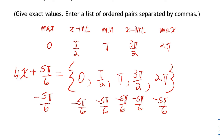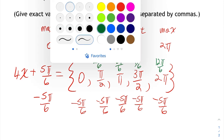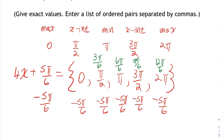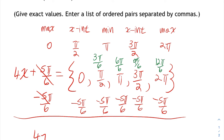For instance, pi over 2 is the same as 3 pi over 6, and pi is the same as 6 pi over 6. 3 pi over 2 is the same as 9 pi over 6, and 2 pi is the same as 12 pi over 6. So they all have a common denominator. When I do the subtraction: 0 minus 5 pi over 6 is negative 5 pi over 6; 3 pi over 6 minus 5 pi over 6 is negative 2 pi over 6; 6 pi over 6 minus 5 pi over 6 is pi over 6; 9 pi over 6 minus 5 pi over 6 is 4 pi over 6; and 12 pi over 6 minus 5 pi over 6 is 7 pi over 6.